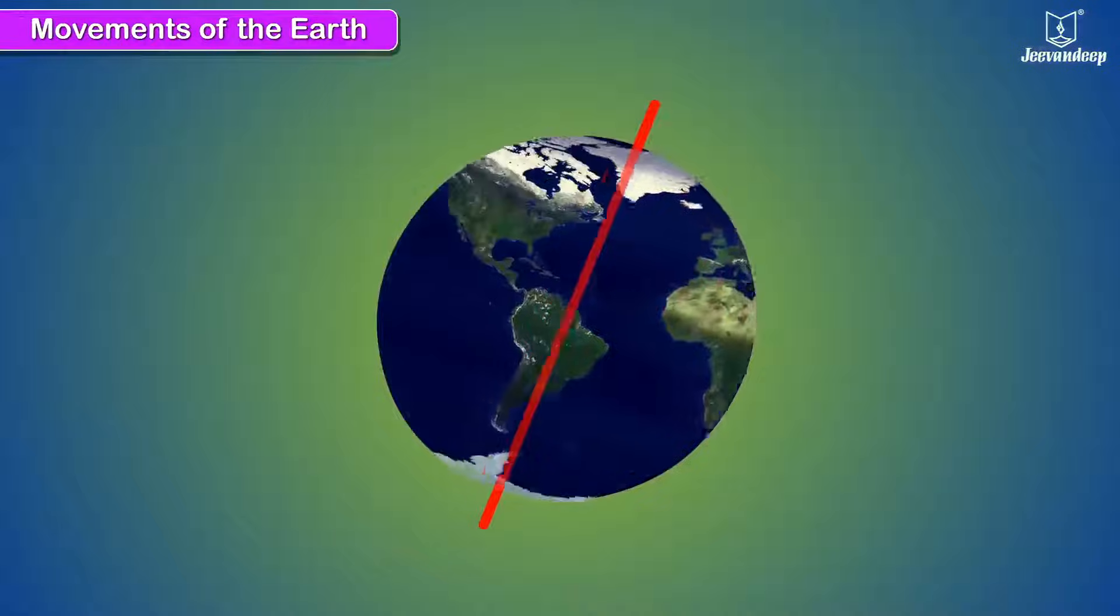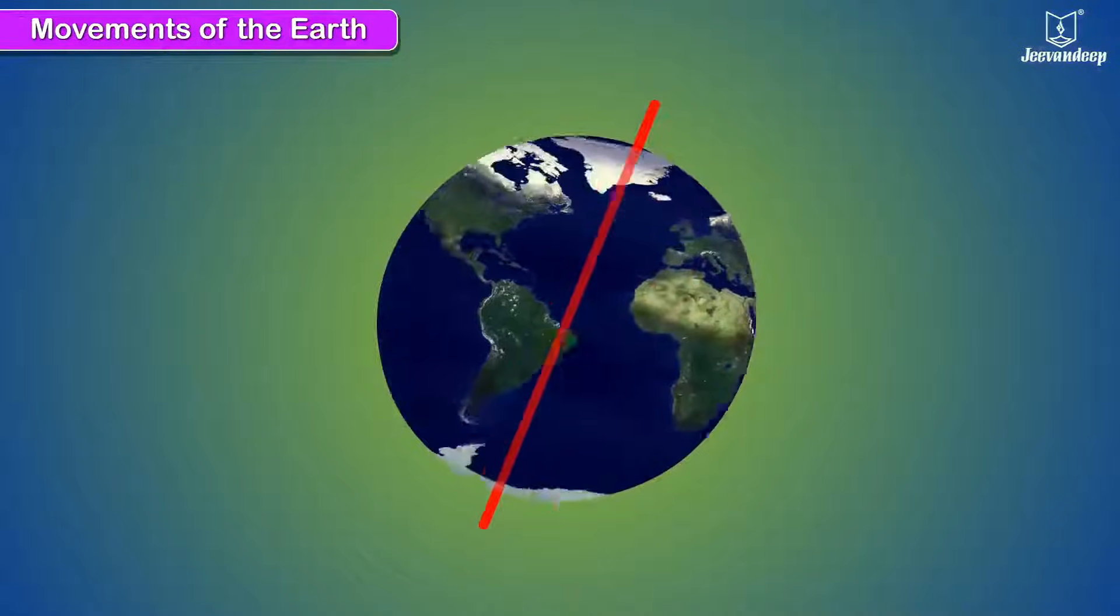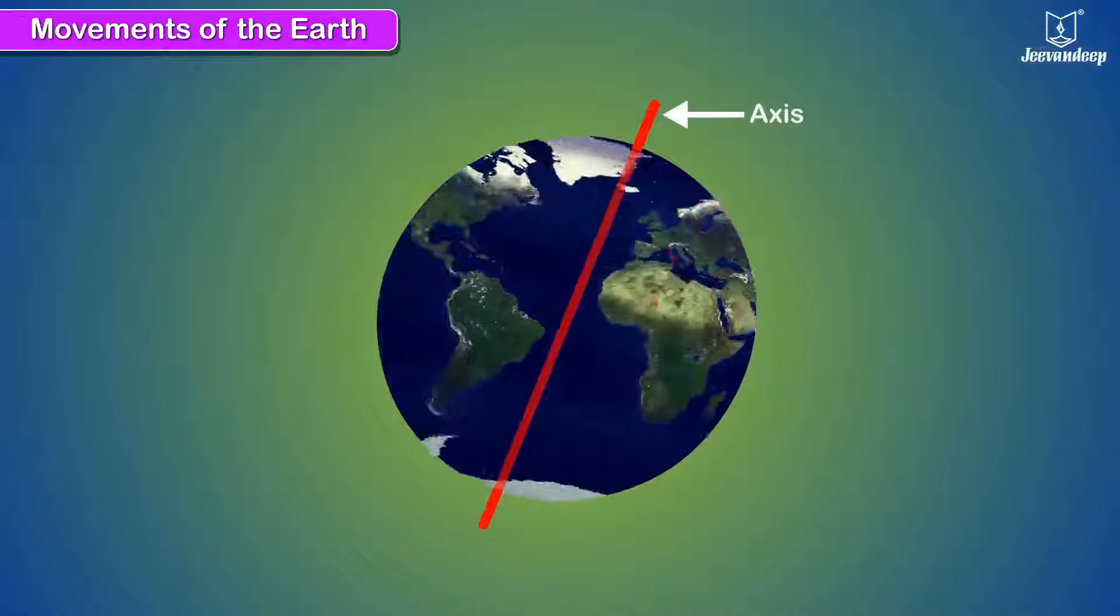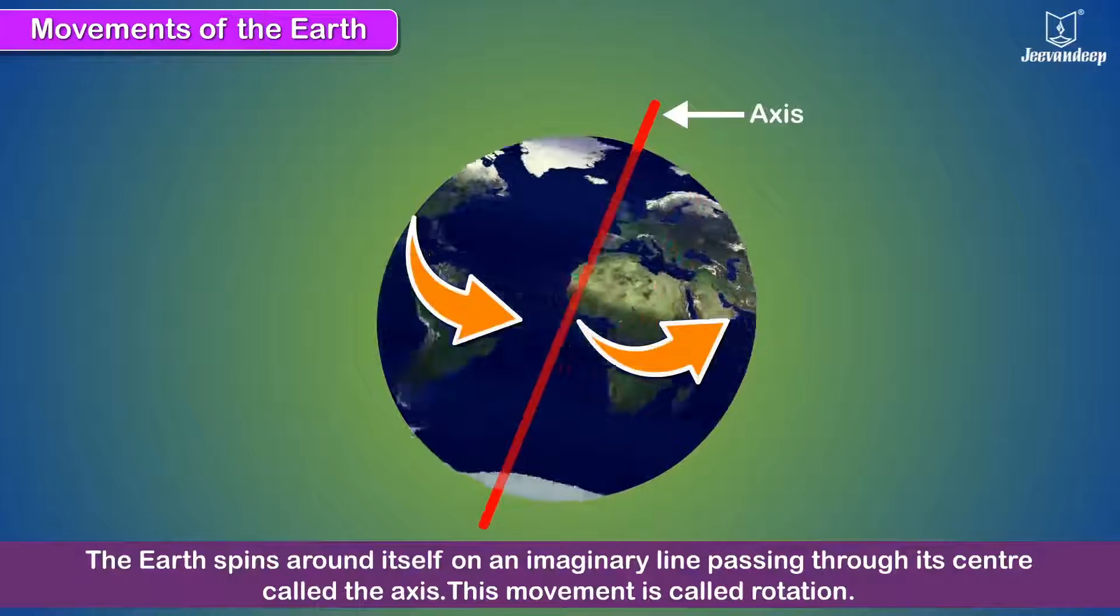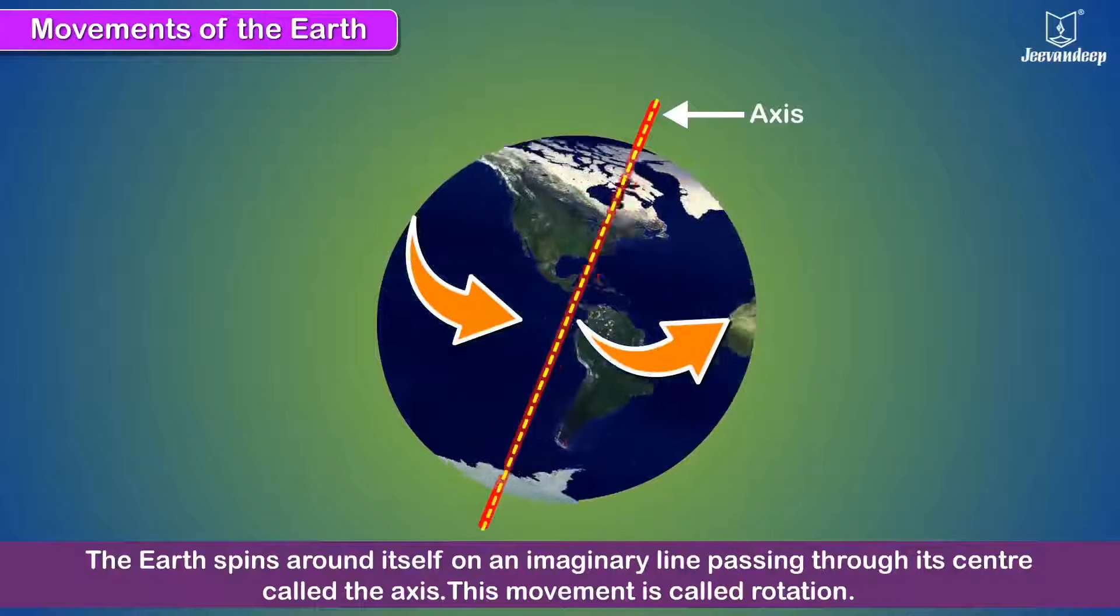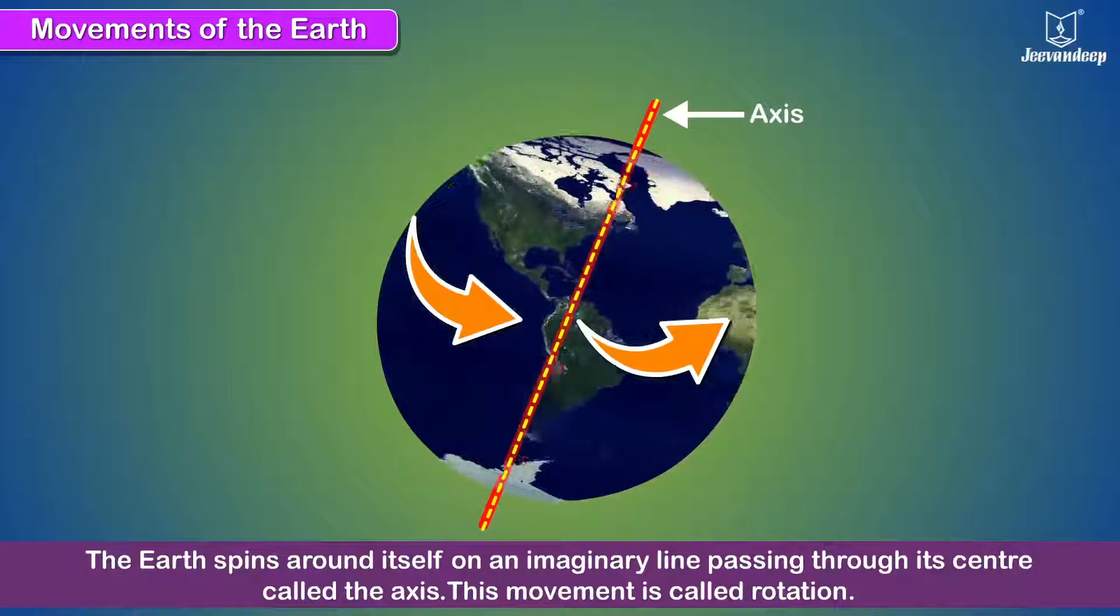Movements of the Earth: rotation of the Earth around its axis. The Earth spins around itself on an imaginary line passing through its center called the axis. This movement is called rotation.